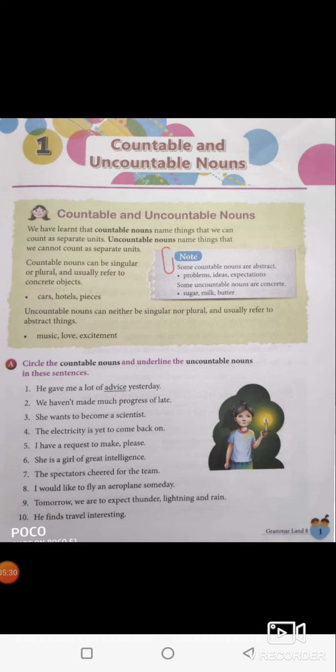Tomorrow we are to expect thunder, lightning and rain. Thunder, lightning and rain are all nouns but cannot be counted. So you have to underline thunder, lightning and rain. He finds travel interesting — travel is actually an uncountable noun here, so you have to underline it.